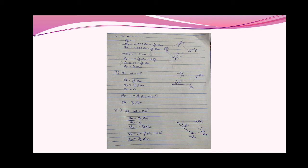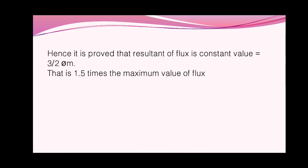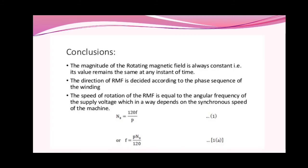In this way we have proved that at any instant the resultant flux is 3/2 φm. At different positions you will still get 3/2 φm. Hence it is proved that the resultant flux is the constant value 3/2 φm, that is 1.5 times the maximum value of flux. Conclusion: the magnitude of the rotating magnetic field is always constant. Its value remains the same at any instant of time. The direction of the RMF is decided according to the phase sequence of the winding. The speed of rotation of the RMF is equal to the angular frequency of the supply voltage, which depends upon the synchronous speed of the machine: Ns = 120f / P.